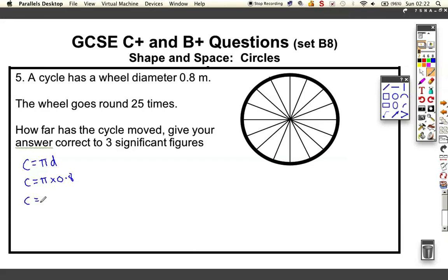0.8 times pi, just tap into your calculator. You might get a slightly different answer if you use 3.14. That's 2.51327412 meters. That's how long it is around the outside of the circle.